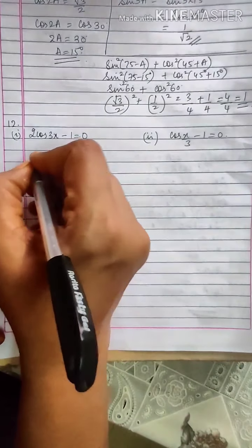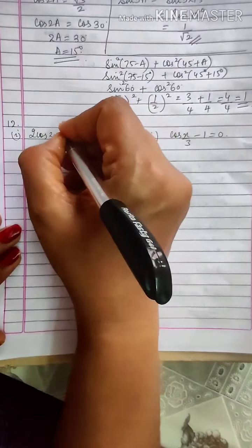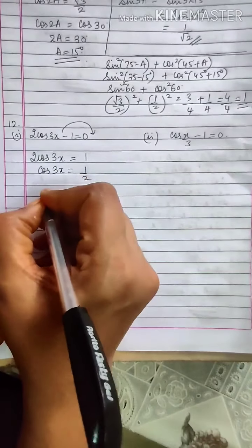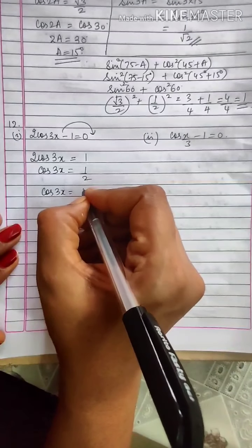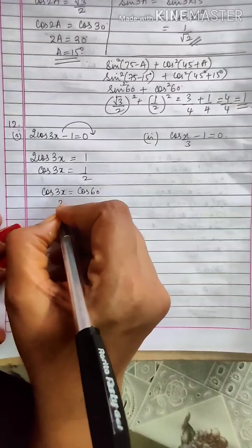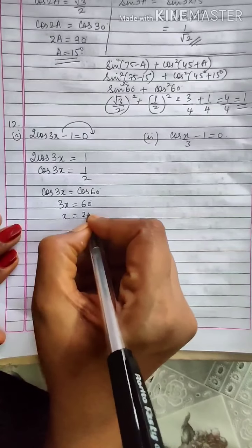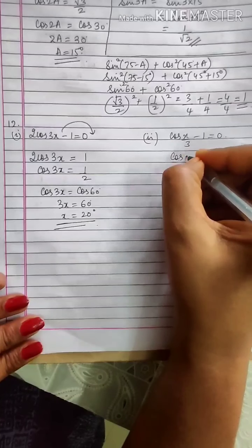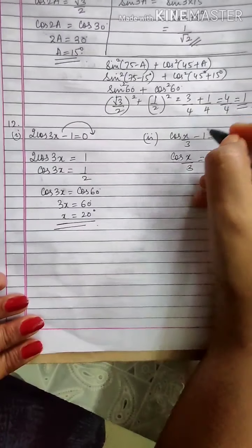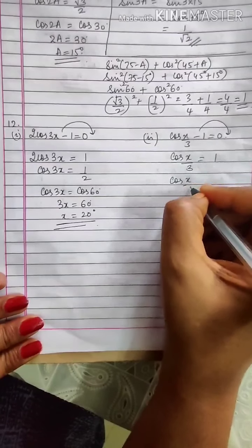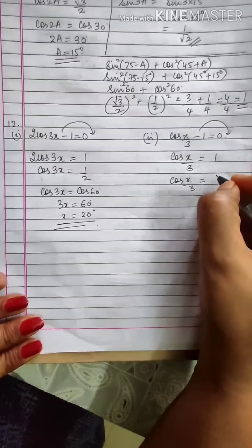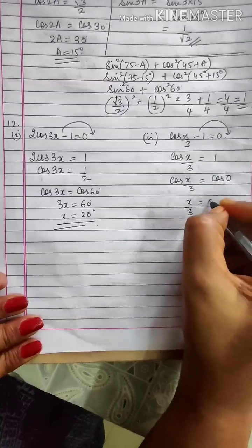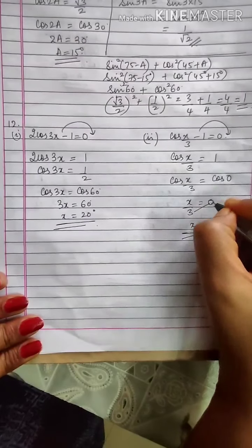Next: 2 cos 3x minus 1 equal to 0. Transposing gives cos 3x equals half, and cos 60 gives 3x equals 60, so x equals 20 degrees. Next: cos(x by 3) minus 1 equal to 0, so cos(x by 3) equals 1, which is cos 0. Therefore x by 3 equals 0 and x equals 0. Thank you children.